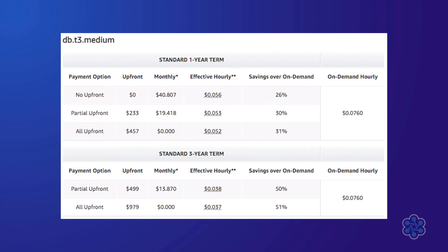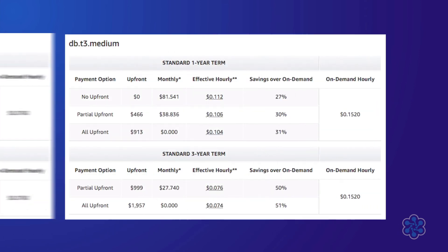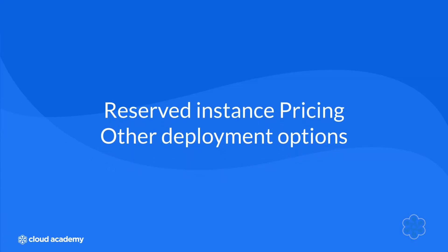The following is an example of the pricing for MySQL reserved instance pricing in the London region for the DB T3 medium instance type. When compared to the on-demand pricing, there is a big cost savings, especially when you factor in the difference in term length plus any upfront payments. In this example, the on-demand pricing for the same instance type is just over 7.5 cents per hour. Comparing this to the three-year term full upfront payment option of just over 3.5 cents per hour, that's a saving of just over 51%. We also have the option to implement multi-AZ with reserved instances, and here is the pricing of multi-AZ with the same instance type as the example above.